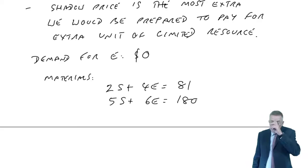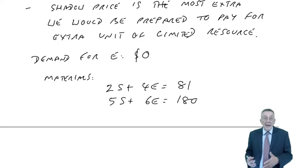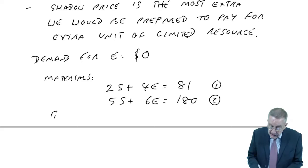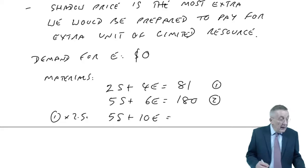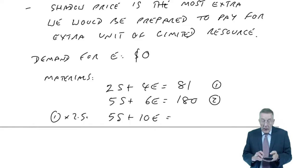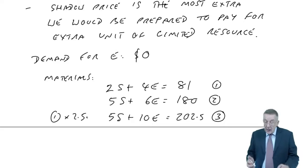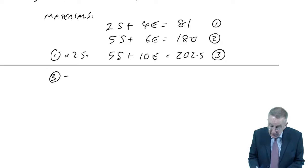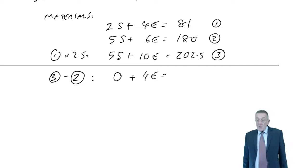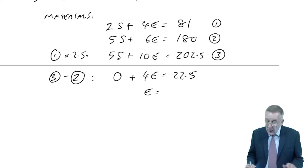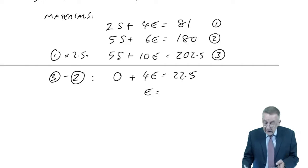With one extra kilo, it becomes 2s plus 4e equals 81, where it crosses the labour line. The labour constraint is 5s plus 6e equals 180. We solve them together. If I multiply the first equation by 2.5, I get 5s plus 10e equals 202.5. Subtracting the second equation, 10e minus 6e is 4e, and 202.5 minus 180 is 22.5. E therefore equals 5.625.